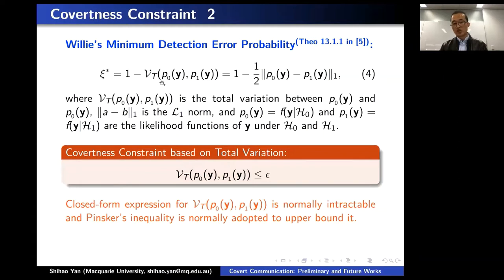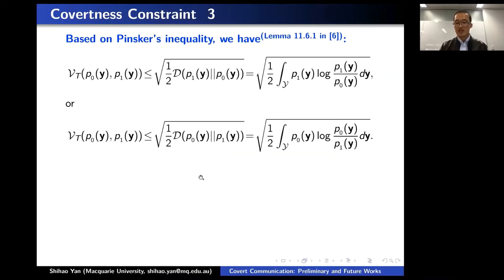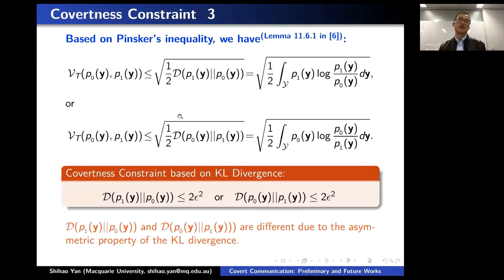We can interpret the total variation as a difference metric for the two likelihood functions. If the difference is larger, the detection error probability will be smaller because it becomes easier for Willie to detect whether Alice is transmitting or not. Considering the intractable expression for the total variation, we use another alternative performance metric. We have two bounds based on the KL divergence, which is asymmetric — meaning the KL divergence from P1 to P0 is different from the KL divergence from P0 to P1. Accordingly, we have two covertness constraints based on the KL divergence.